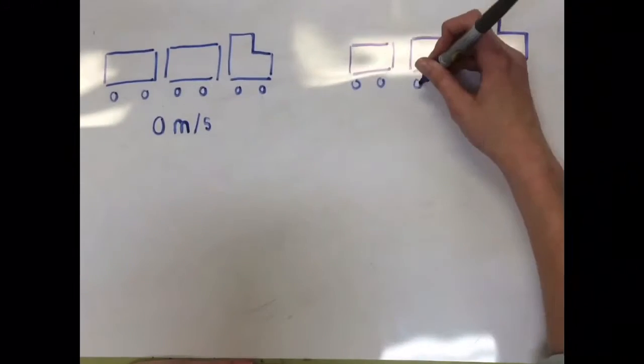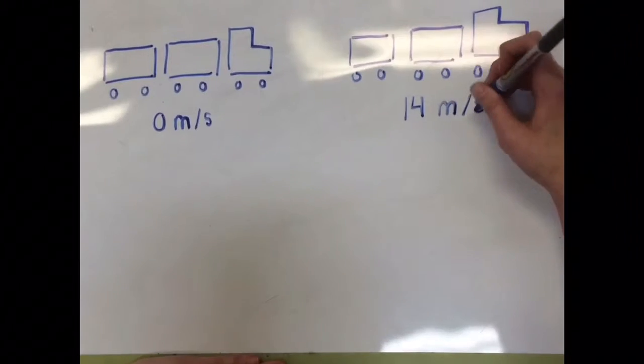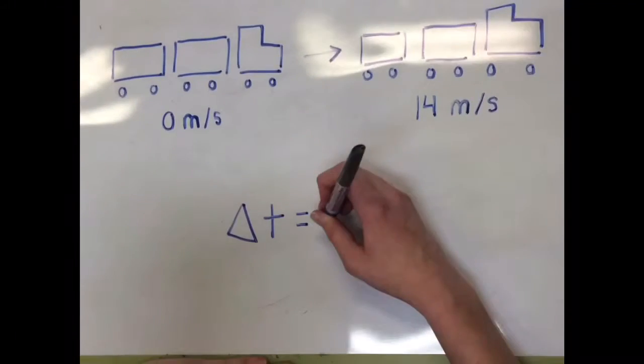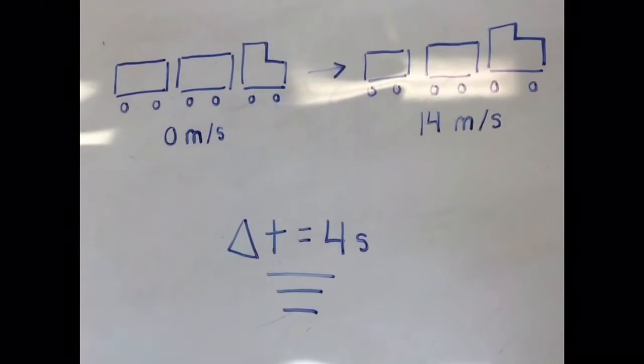V1 of the train would of course be 0 meters per second, and we came to a conclusion that after 4 seconds the train appears to be moving at close to 14 meters per second, which would be the V2.